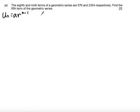That means that u8 would be a times r to the power of n minus 1, so 8 minus 1 is 7, and that is equal to 576. u9 is going to be ar to the power of 9 minus 1, which is 8, which gives me 2304.